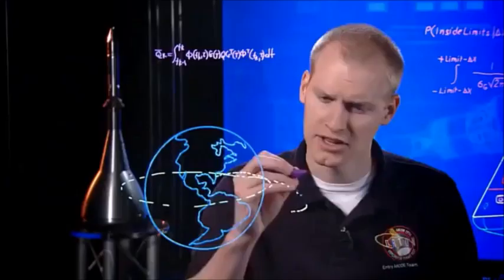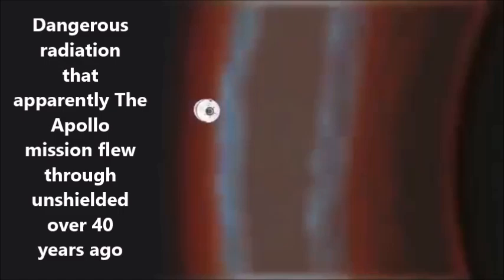Radiation like this could harm the guidance systems, onboard computers, or other electronics on Orion. Naturally, we have to pass through this danger zone twice, once up and once back.